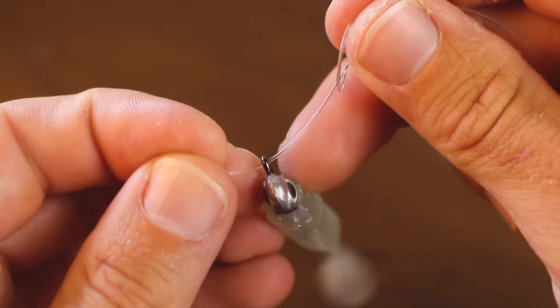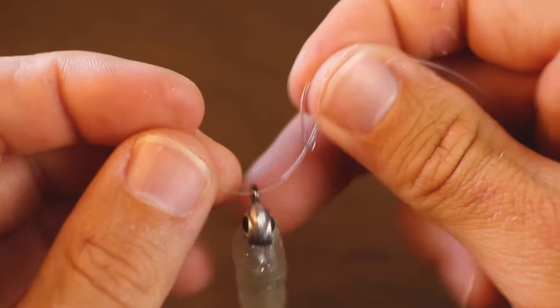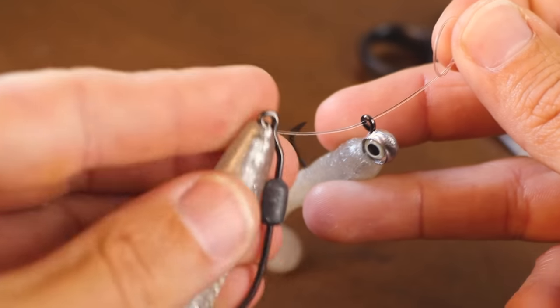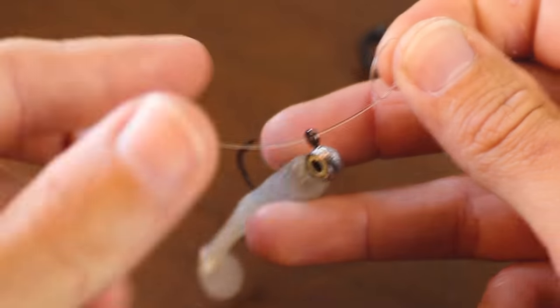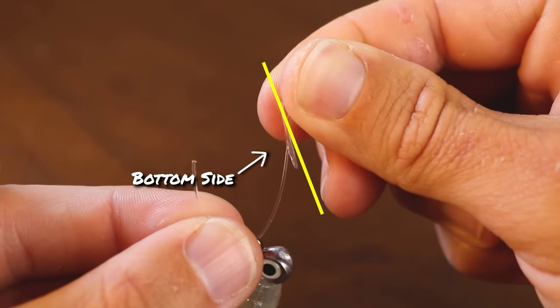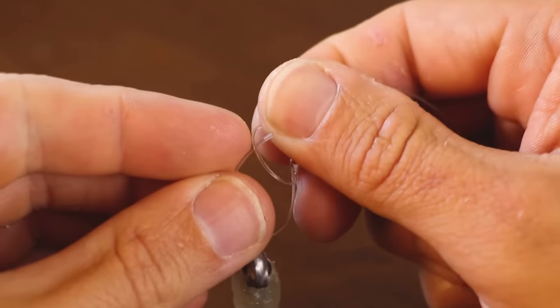So we just put it through the eye of our lure. Again, if you're using a topwater, that would just be that top swivel right there. And if you're using a weedless presentation here, it's all the same for each lure. So we're going to go through the bottom side of that loop, coming through to the top. That's our first step.